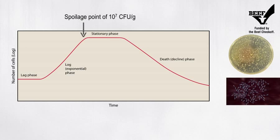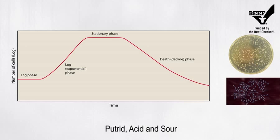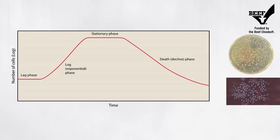Spoilage becomes evident at the transition between lag and stationary growth when populations are at their maximum. Off odors such as putrid, acid, and sour are detectable when spoilage bacteria reach populations of approximately 10 million colony-forming units.